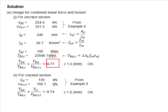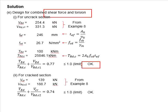This value of 0.77 is less than 1.0, which fulfills the limit. Therefore, the provided resistance for the combined shear and torsion is adequate at the uncracked section.